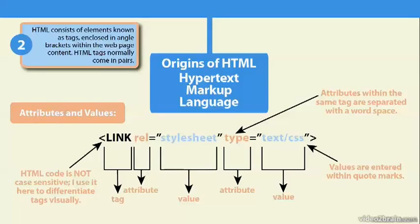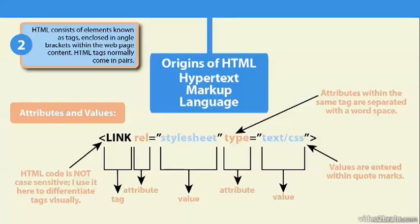You're typically not going to be writing all your own code — you'll be using a program like Dreamweaver — but it is good to understand the source code and what all these things mean. In this particular example, I've got the link tag, I've added an attribute and a value, and here's another attribute and another value. The attributes within the same tag are separated with a word space, and the values are entered within quote marks.